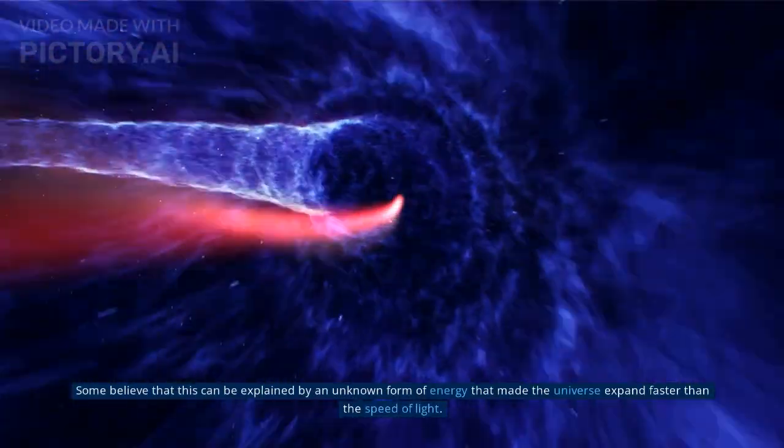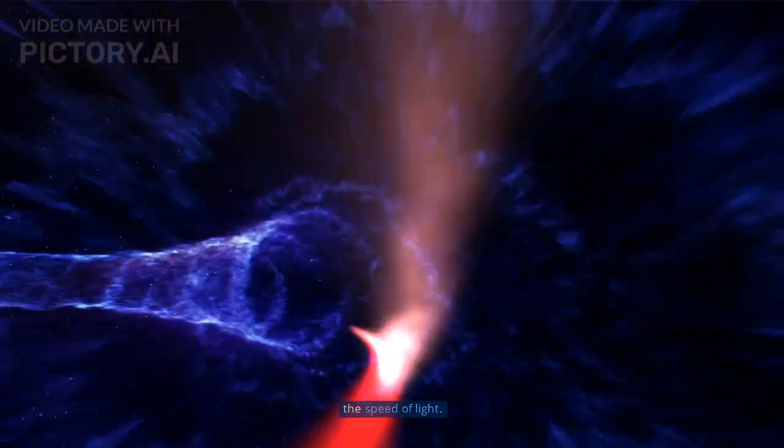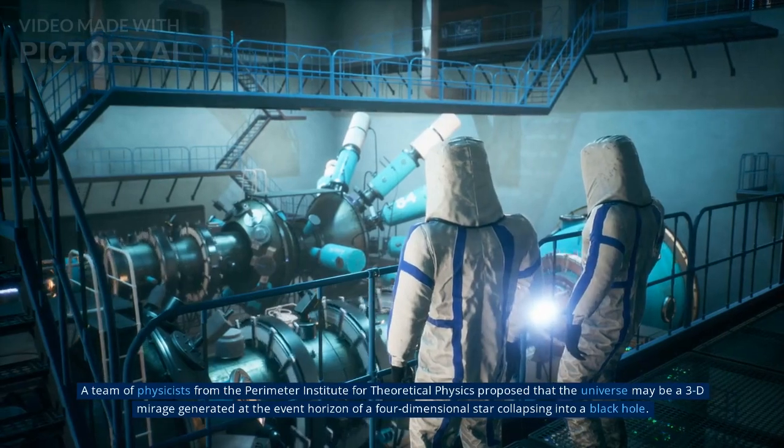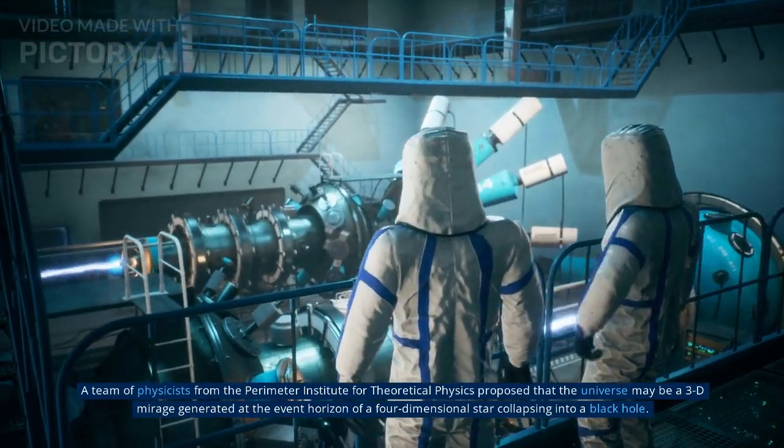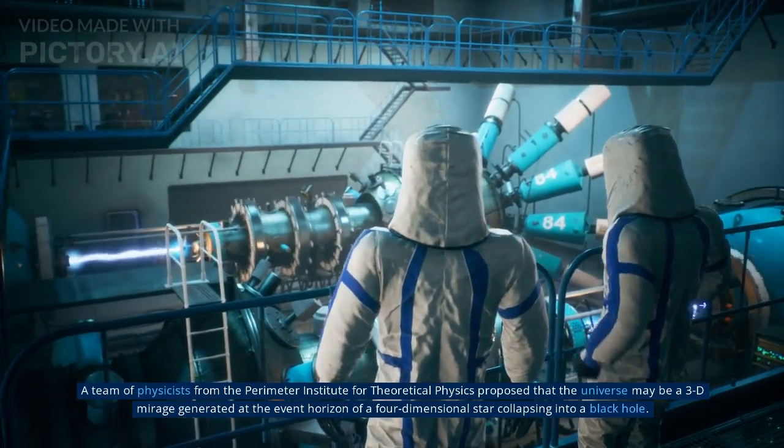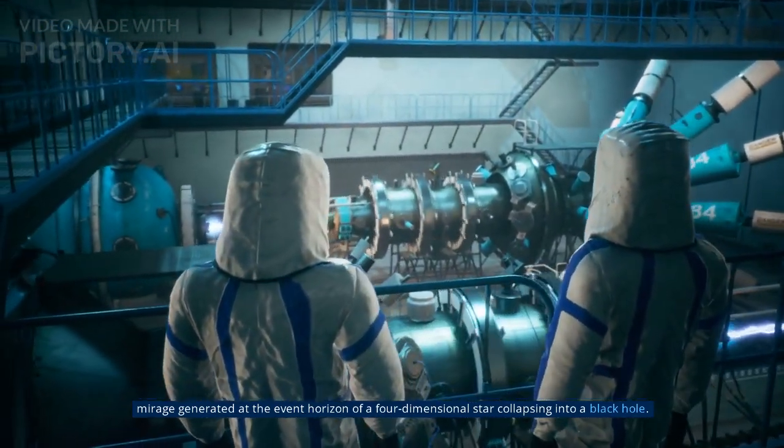Some believe that this can be explained by an unknown form of energy that made the universe expand faster than the speed of light. A team of physicists from the Perimeter Institute for Theoretical Physics proposed that the universe may be a 3-D mirage generated at the event horizon of a four-dimensional star collapsing into a black hole.